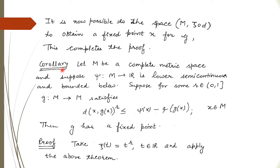The corollary states: let m be a complete metric space and suppose ψ is a mapping from m to ℝ which is lower semi-continuous and bounded below. For some r with 0 < r ≤ 1, if g satisfies the corresponding inequality, then g has a fixed point. We can prove this using the previous theorem by substituting ξ(t) = t^r.